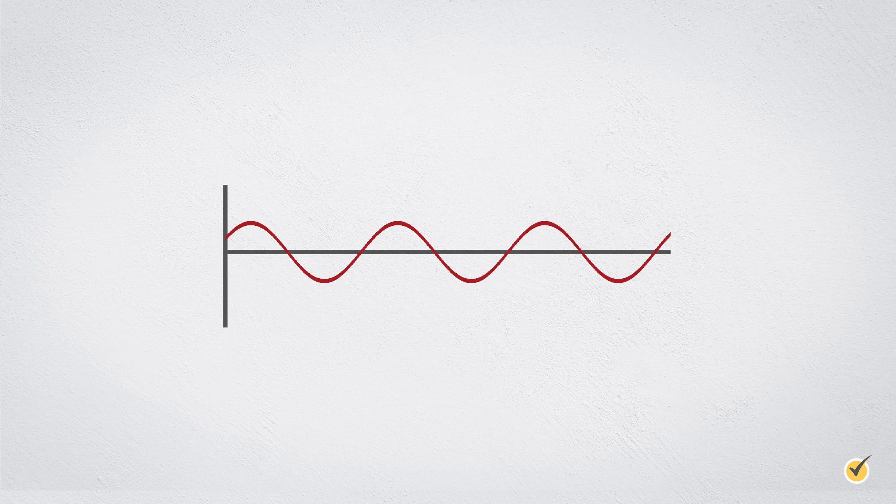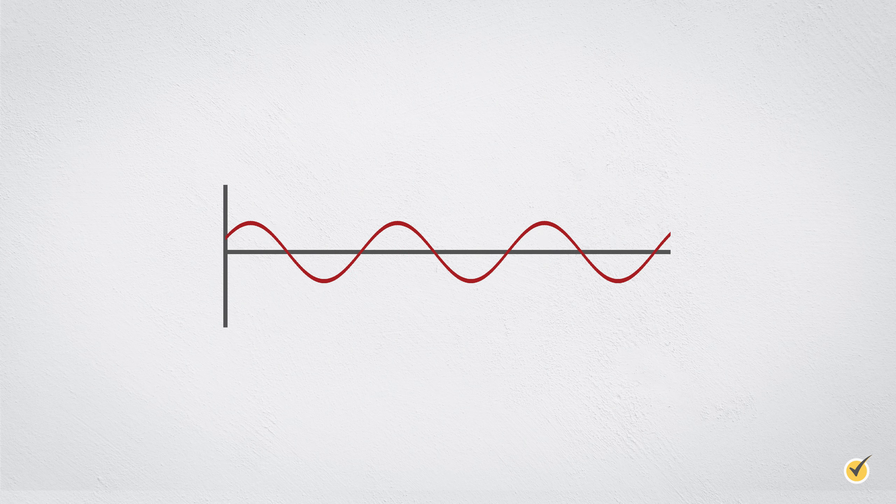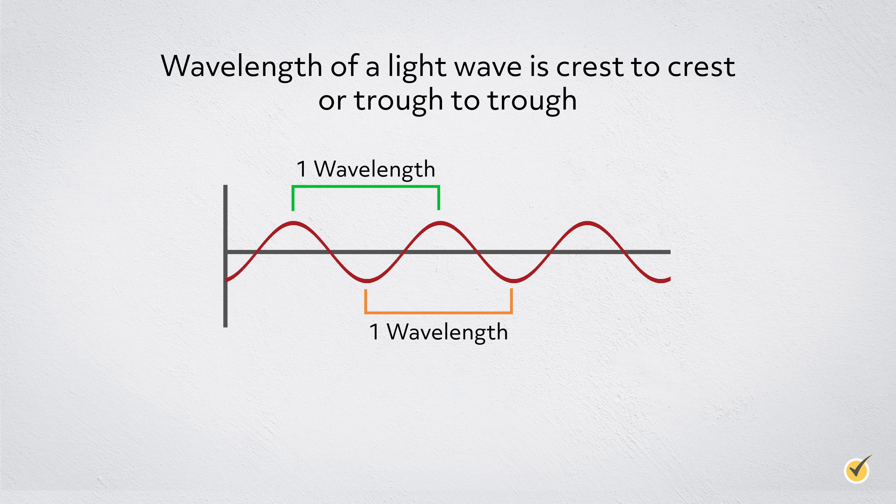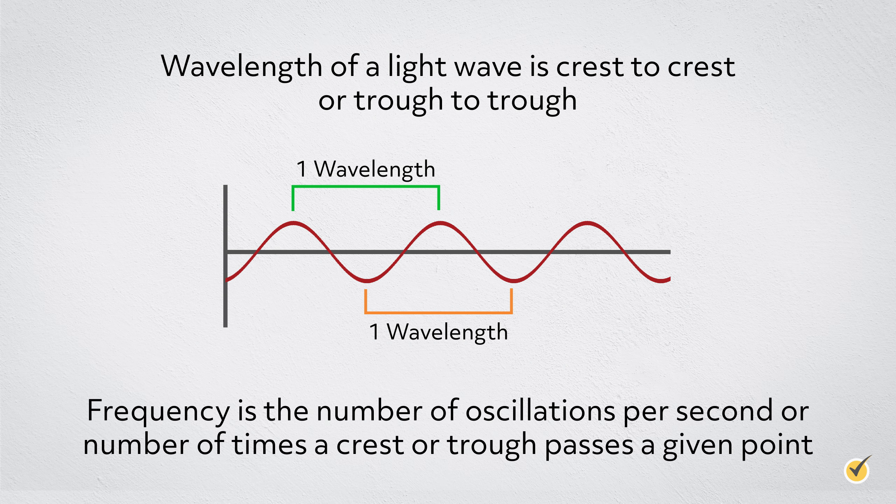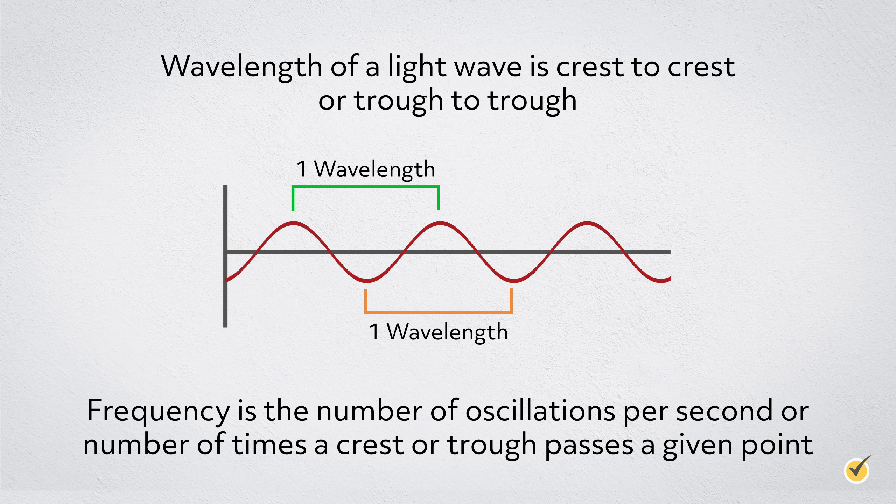All types of light act as a wave with a wavelength and a frequency. The wavelength of a light wave is considered to be the distance from crest to crest or trough to trough, where the trough is the lowest part of the wave and the crest is the highest. The frequency can be thought of as the number of oscillations per second or the number of crests or troughs that pass a certain point per second.